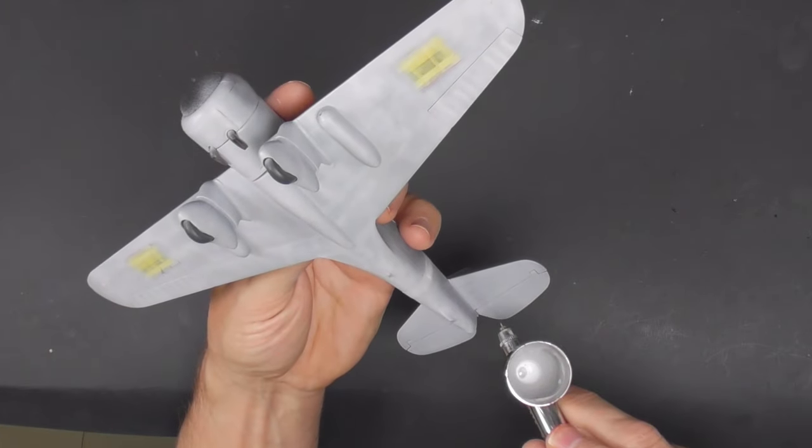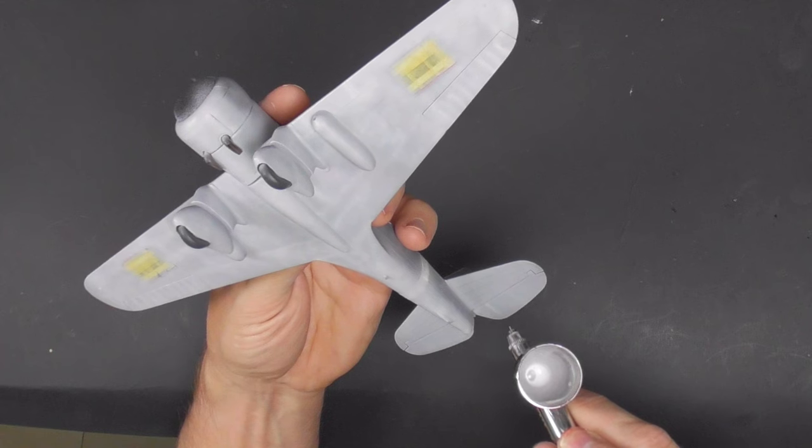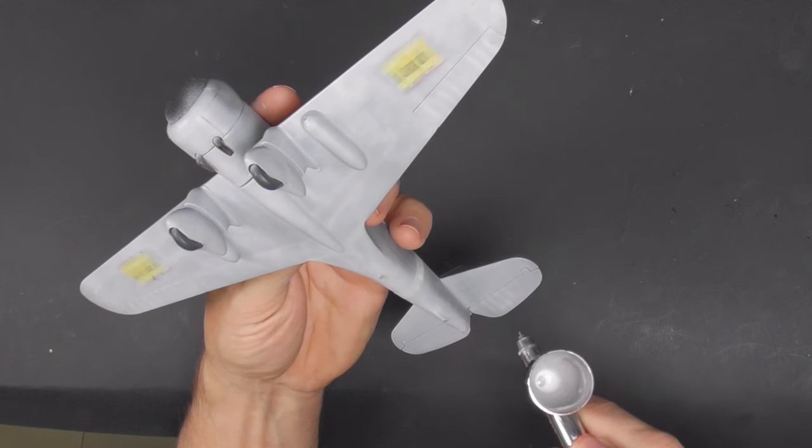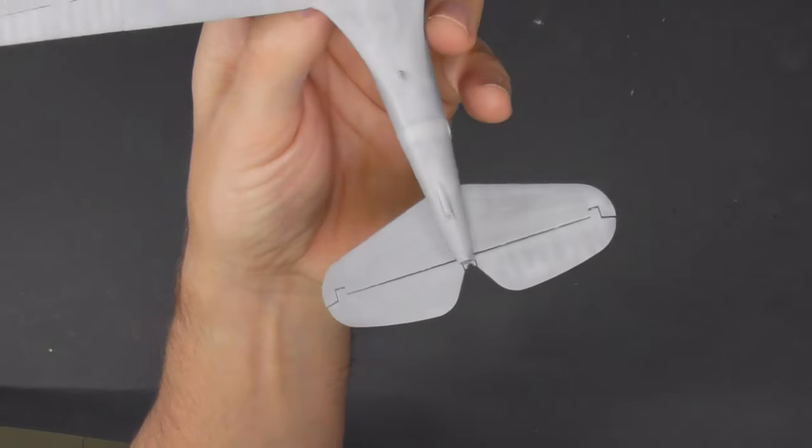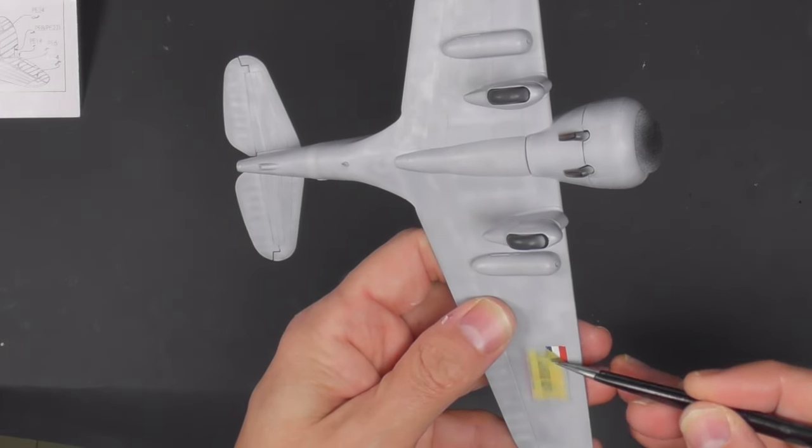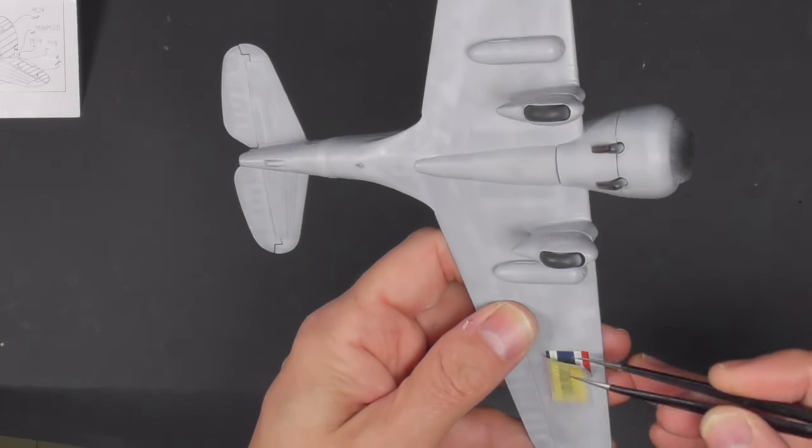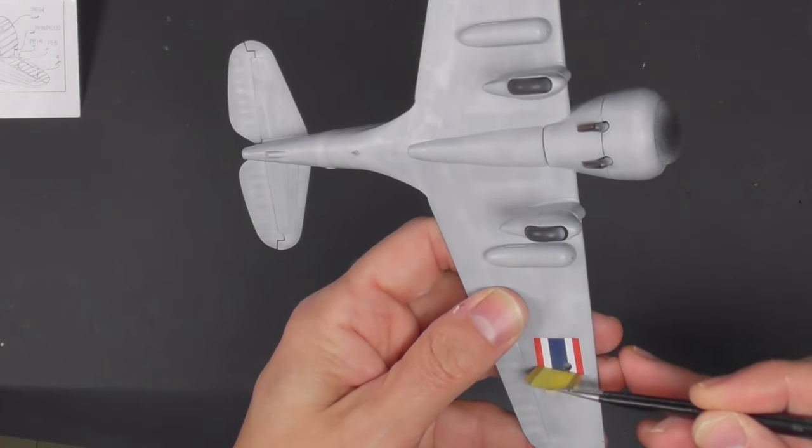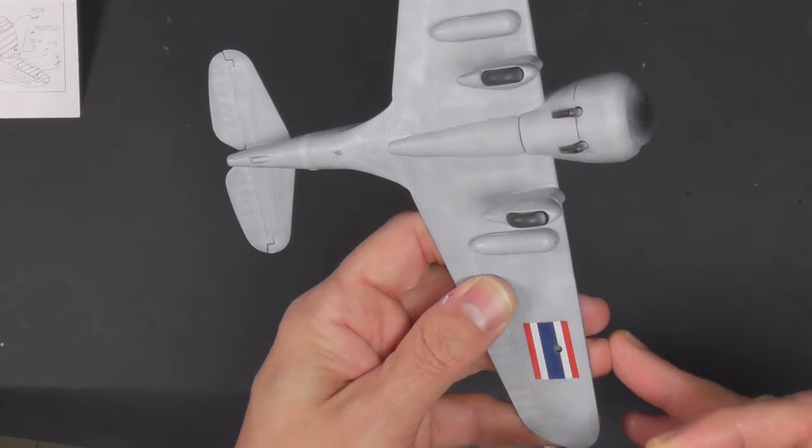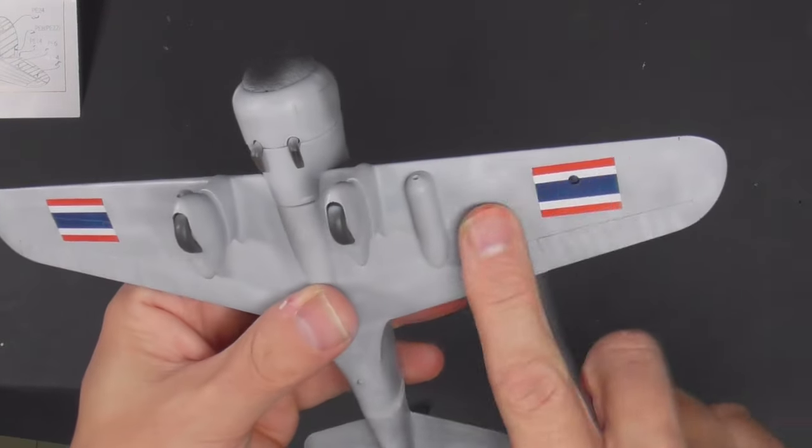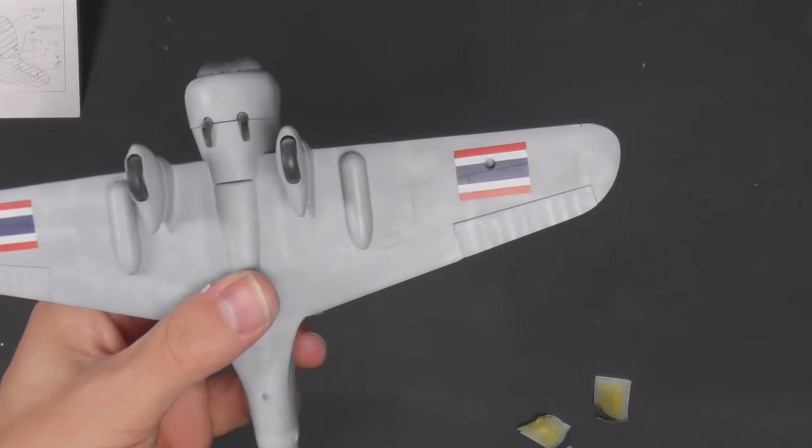Just going over there, just highlighting some of the raised rib detail on the fabric areas. Now, always a fun moment—off come the masks for the markings. And I think I got away with it really quite lightly. I was so pleased with how that turned out.